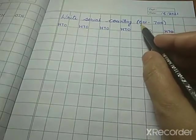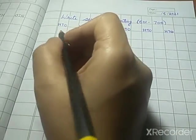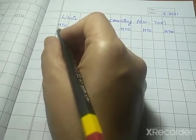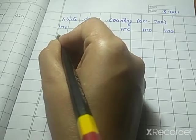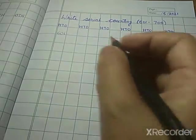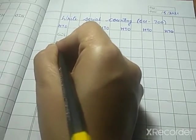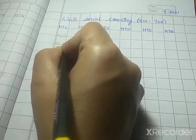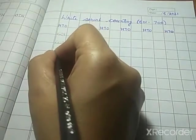So we have to write counting from 601. So we will start writing number 601. So let's write 601. 601. After 601, we will write 602. What comes after 602? 603.